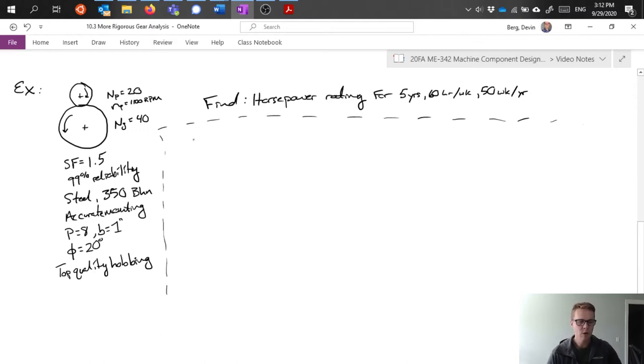We're gonna start by saying we have our base equation that looks like this and we have to start filling in the gaps. P we have, B we have, J the geometry factor we can look up, FT we don't have. But if we think about what the question is actually asking, it's asking for horsepower rating.